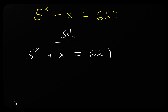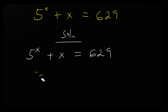Let's observe this carefully. If I plug in x equals 4, this side will be 625. So 625 plus 4 gives us 629, which matches the right hand side. So when x is 4, this side will be 625 plus 4, that will be 629.